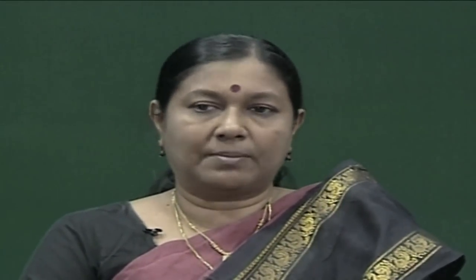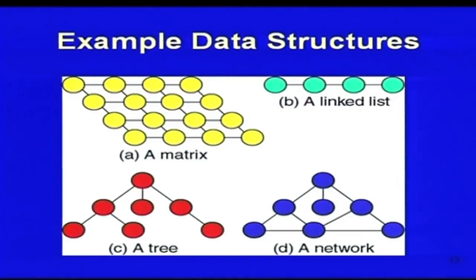Sometimes you need to get the capacity of the list — what is the total count of elements. Sometimes you need to modify, that is update, delete, or insert elements in the list. Generally, for most applications, modification is not as common as accessing. You can also think of a matrix as a data structure, a linked list as a data structure, a tree as a data structure, and a network as a data structure. How these are implemented and represented is what we are going to look at as we go along.